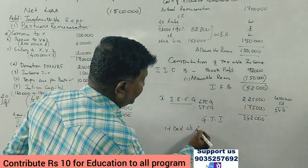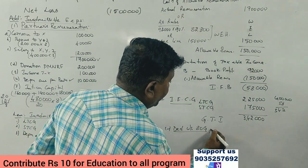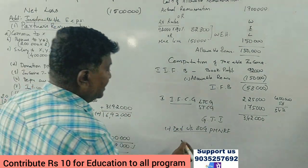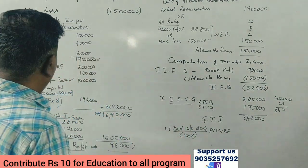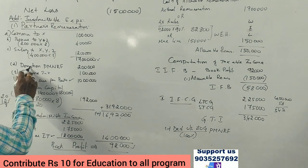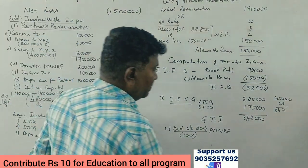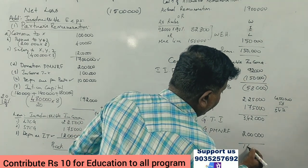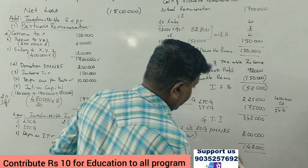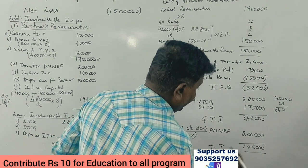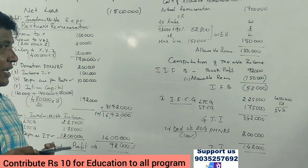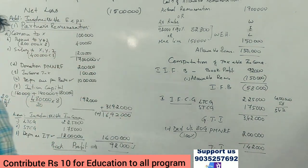Deduction under section 80G: donation to Prime Minister National Relief Fund qualifies for 100% deduction. The donation amount is 2 lakh rupees, so the full 2 lakh rupees is deductible. After this deduction, the taxable income — or total income — comes to approximately 14 lakh rupees, which is the amount subject to tax.